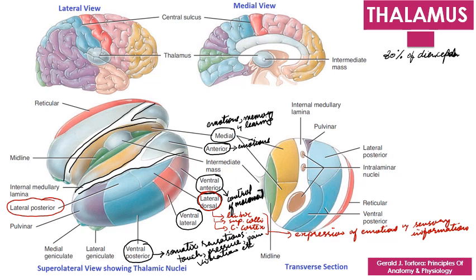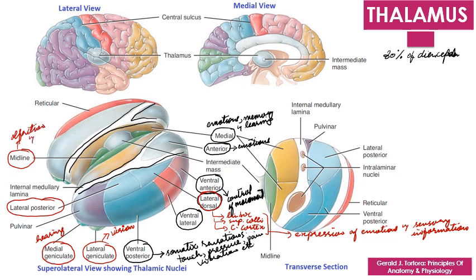The lateral geniculate nucleus is concerned with vision. The medial geniculate nucleus is concerned with hearing and relays auditory impulses to the cortex. The midline nuclei are concerned with relaying information regarding olfaction, attention, and memory.